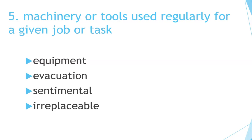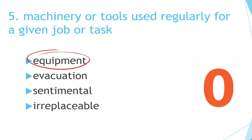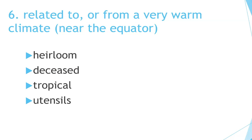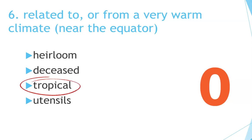Number 5. Machinery or tools used regularly for a given job or task. Equipment. Number 6. Related to or from a very warm climate near the equator. Tropical.